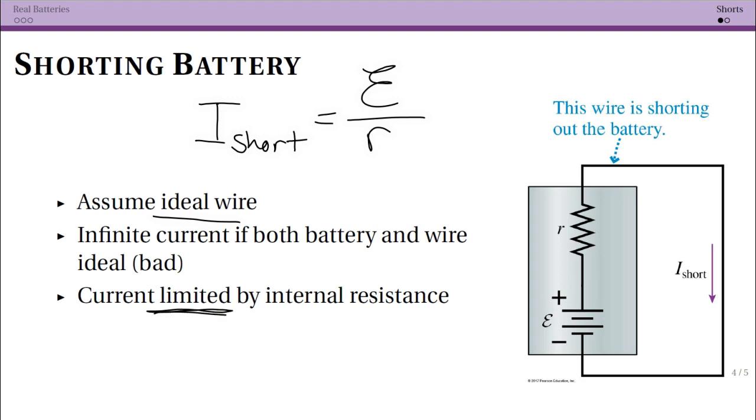So there is a maximum amount of current you can get out, and that's in the case where you connect the two sides of the battery together, keeping in mind that if you didn't have a path from the positive terminal to the negative terminal, no current can flow. So this is actually the maximum current you will ever see is the shorted current. So this is one scenario where you have to think about a real battery.